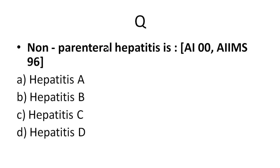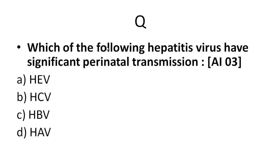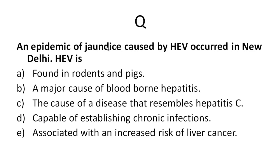Let's look at some questions. Non-parenteral hepatitis includes only A and E, so the answer is A. Which hepatitis virus has significant perinatal transmission? The answer is hepatitis B virus, which has the maximum risk.